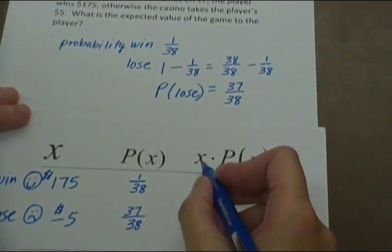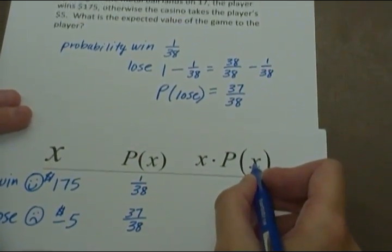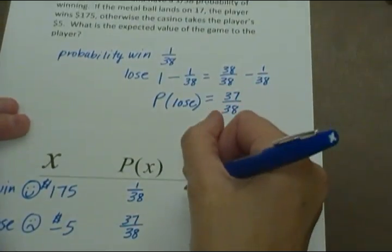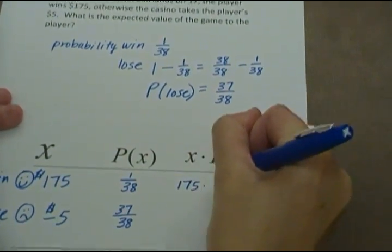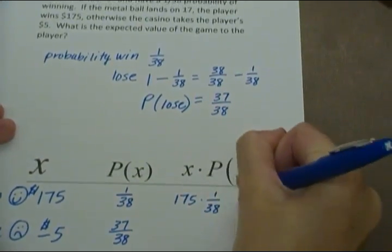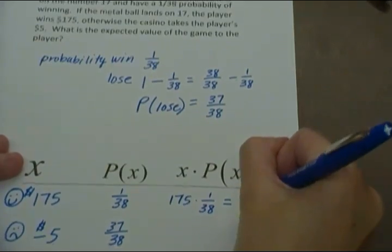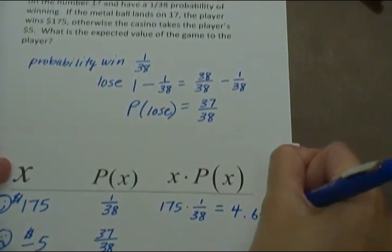Now on this column, you want to take x times P of x. So this is x times P of x. You take 175 times 1 over 38, and that will equal 4.6053.